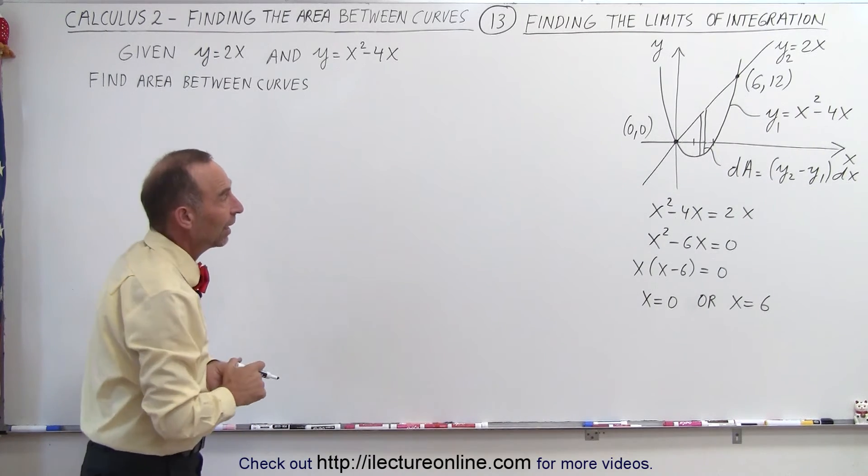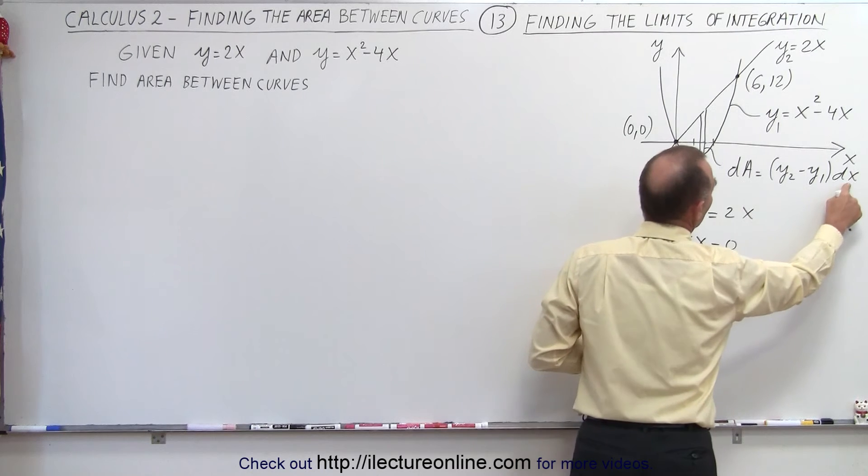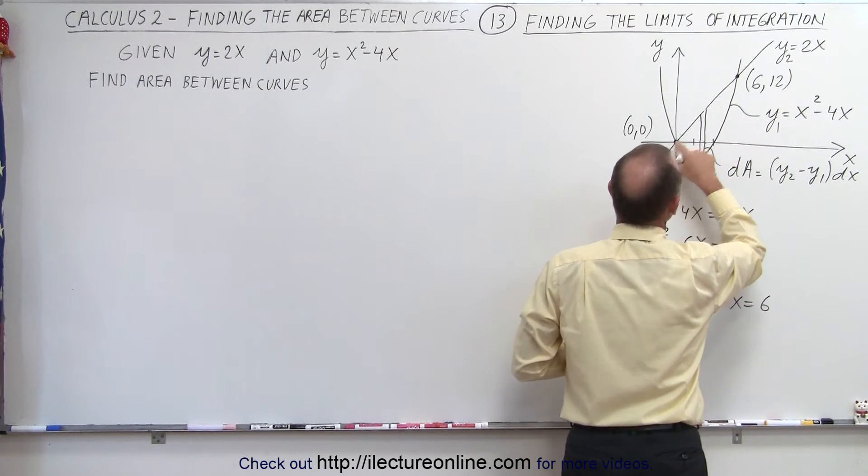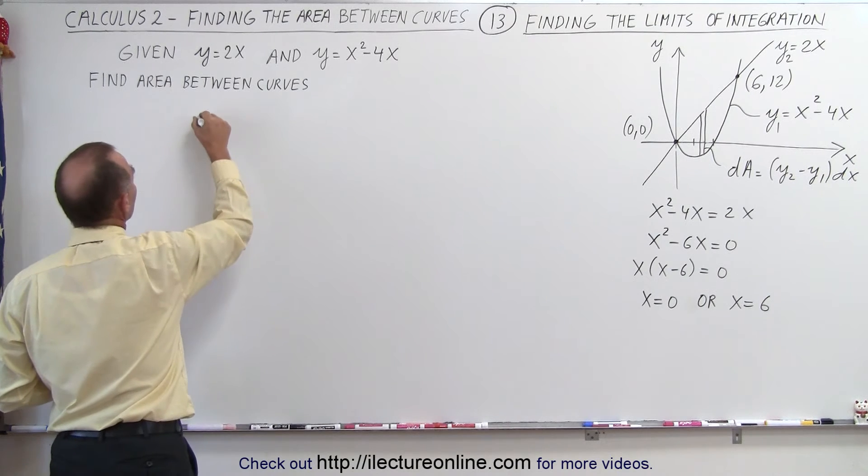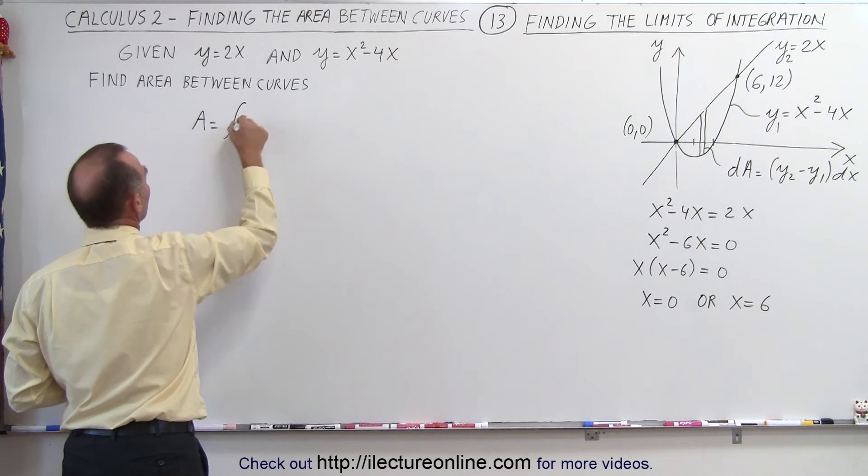And then since we're going to integrate in the x direction, the x limits will go from x equals 0 to x equals 6. So that means our area here will be equal to the integral of our dA areas, so that will be equal to the integral from x equals 0 to x equals 6 of dA.